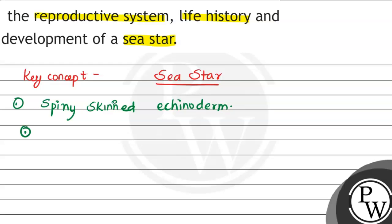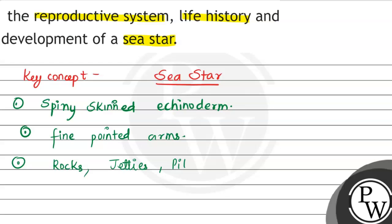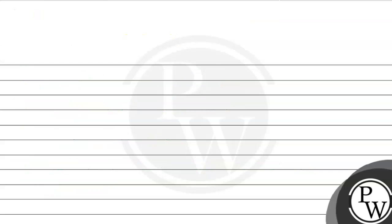इनके पास present होती है fine pointed arms. यह mainly रहते हैं on the rocks, jetties पर, और filings में — in shallow और salty water में यह रहते हैं। अब बात करते हैं इनके reproduction के बारे में।